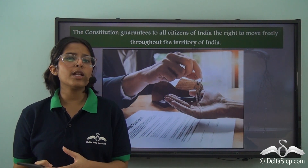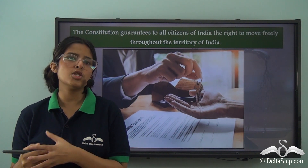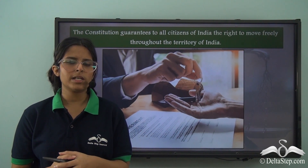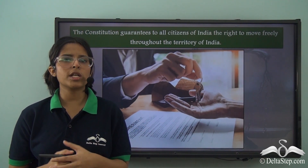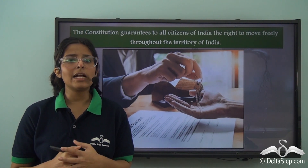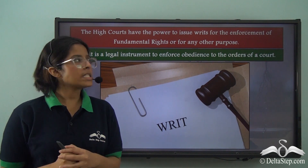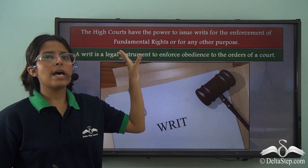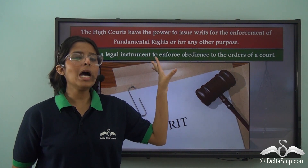Imagine that you and your parents live in a rented flat. The owner is not getting new tenants so he wants you and your family to stay there. But your parents have bought a new flat somewhere else and want to move out, so the owner locks up your parents in that flat. In such a circumstance, you can move the Supreme Court or the High Courts and say that your fundamental right has been taken away. The Constitution empowers the High Court to issue writs for the enforcement of fundamental rights or for other purposes.